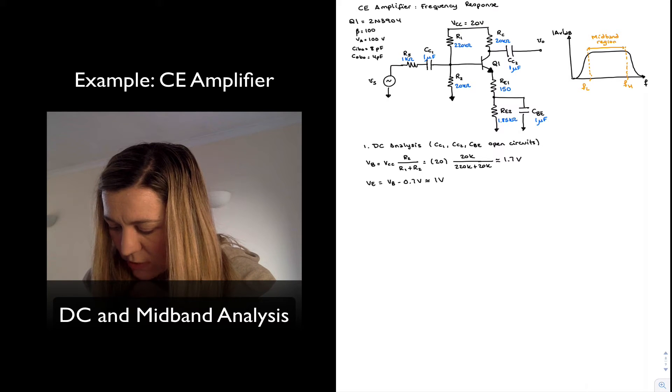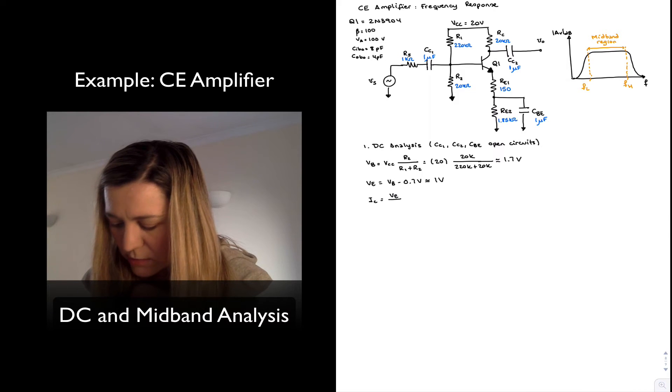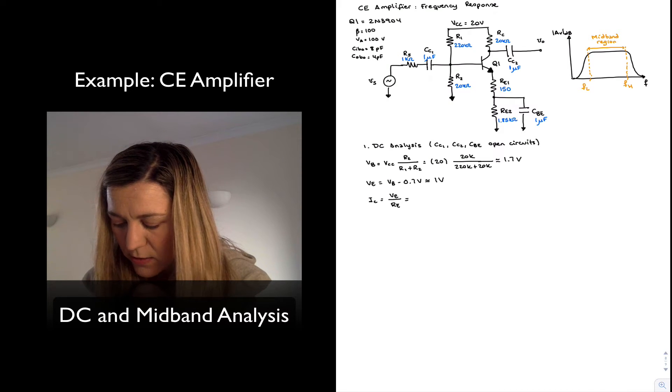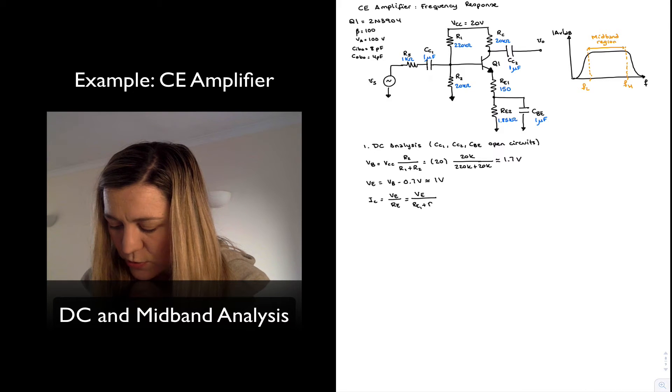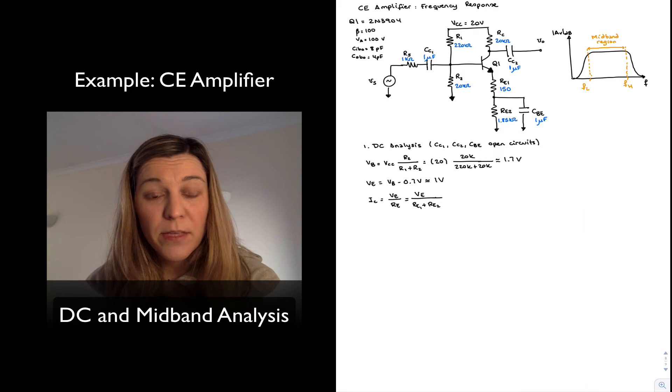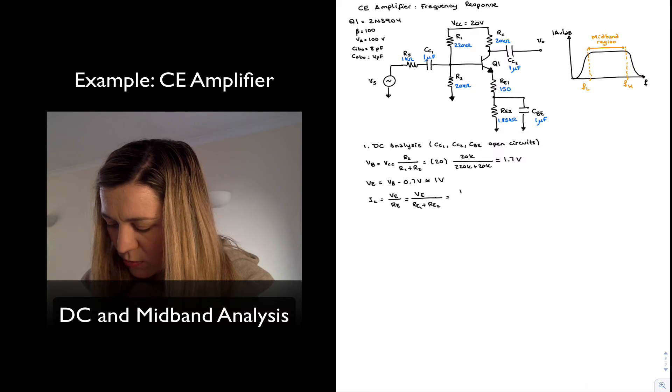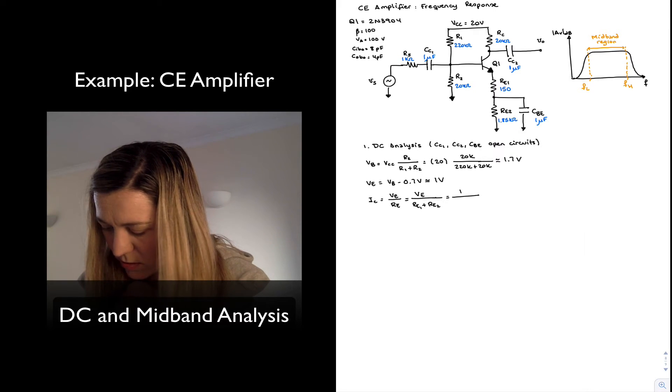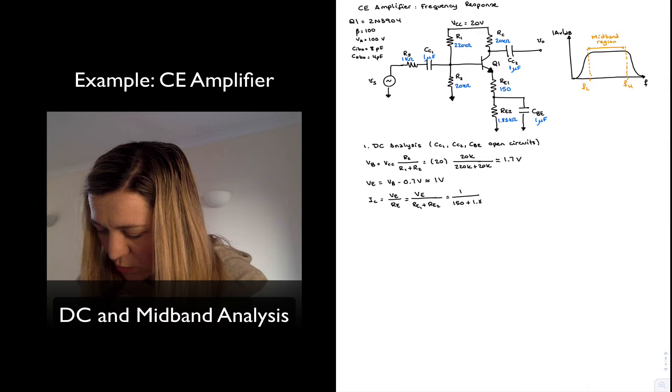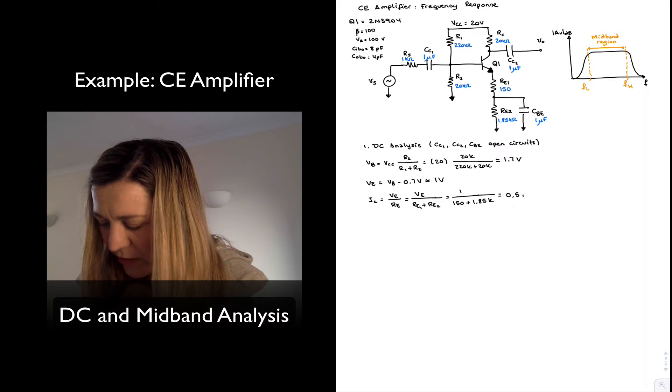My quiescent current, IC, I can calculate as my emitter voltage divided by the overall emitter resistance, Re. And the overall resistance connected to the emitter in this case is going to be Re1 plus Re2. And the reason for that is, again, I'm assuming my bypass capacitor is an open circuit. So this is going to be 1V divided by 150 plus 1.85K or 0.5 mA.